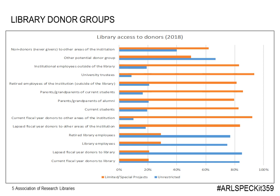We also asked respondents to indicate the level of access to donor groups. The majority of respondents have unrestricted access to only four groups of donors: current fiscal year donors to the library, library donor groups who have lapsed for a year, current library employees, and library retirees. The majority also enjoy limited or special project access to other groups, including current students, current year and lapsed donors to other areas of the institution, parents and grandparents of current students and alumni, and university trustees.